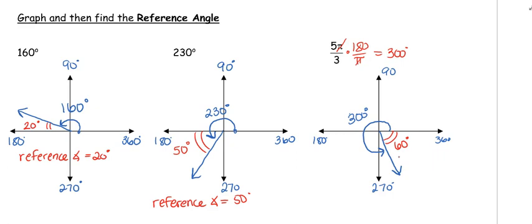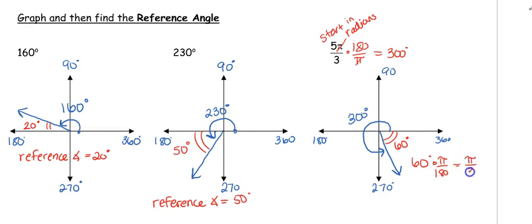Now if you put 60 degrees down on a quiz or a test, it will be wrong. Although it is 60 degrees, if the problem starts in radians, your answer must be in radians. So I have to take that reference angle and convert it back into radians. 60 divided by 180, we end up with pi over 3. So in this case, your reference angle is going to be pi over 3. That is the number one mistake — you get so used to converting everything to degrees, but if the question starts in radians, your answer must be in radians.